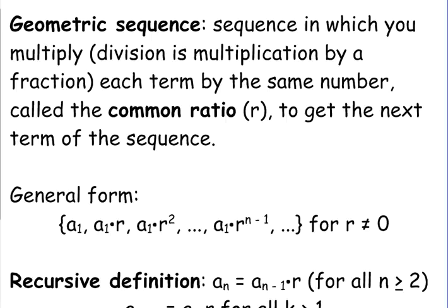We call that number yesterday was the common difference when we were adding and subtracting. This is going to be called the common ratio, and we use an R to get the next term of the sequence.